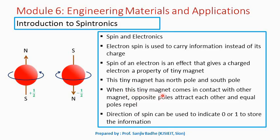When this tiny magnet comes in contact with another magnet, opposite poles attract each other and equal poles repel each other. The direction of spin can be used to indicate 0 or 1 to store information. The direction of spin can be identified by knowing the direction of the magnetic field created — it can be either up or down.